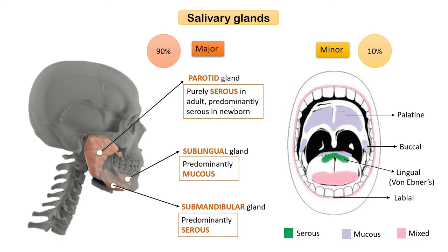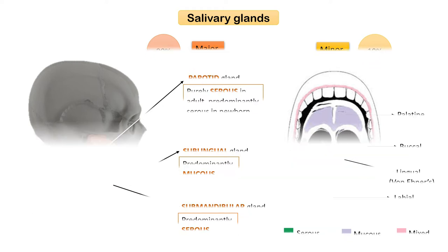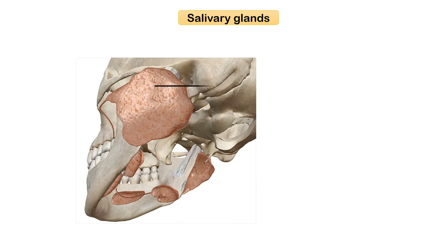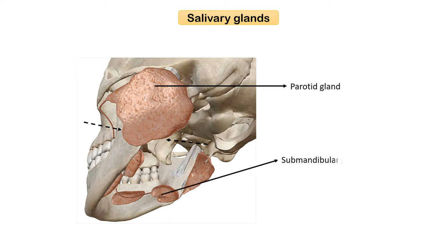Looking at the anatomical aspects: the parotid gland is located subcutaneously below and in front of the ear, in the space between the ramus of the mandible and the styloid process of the temporal bone. The submandibular gland is located under the floor of the mouth in the submandibular triangle of the neck. The sublingual gland is located in the floor of the mouth, anterior to the submandibular gland.